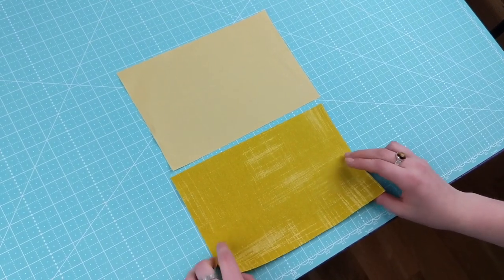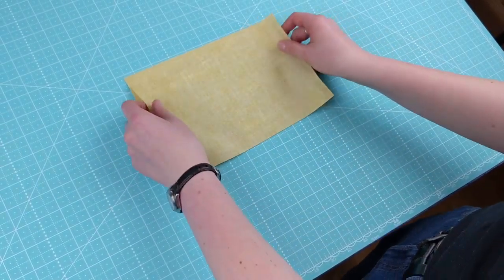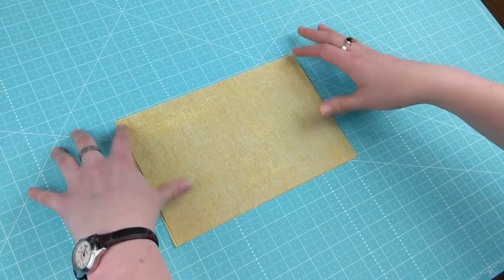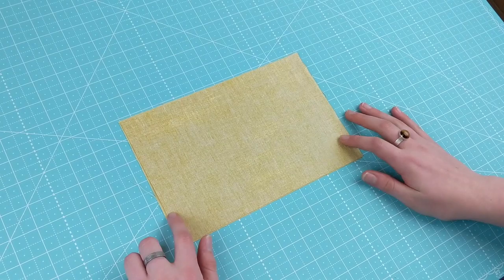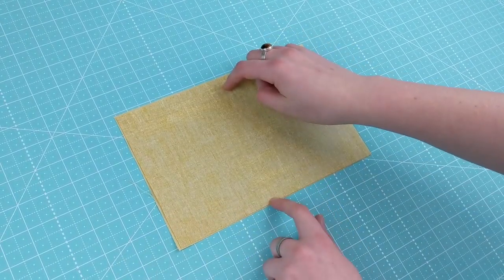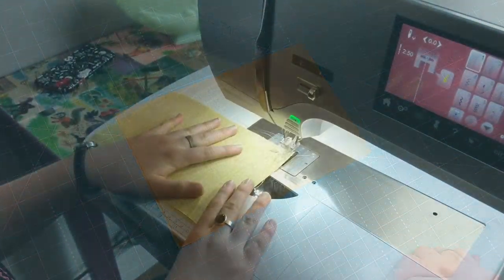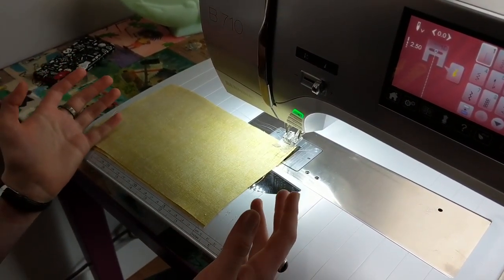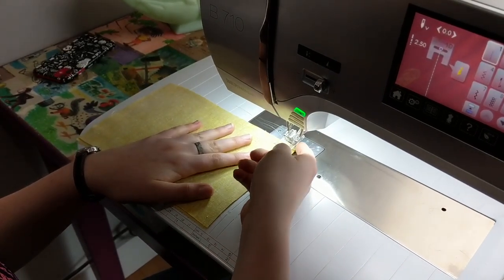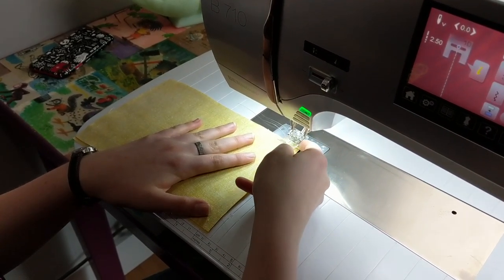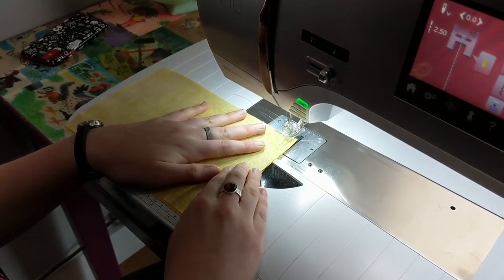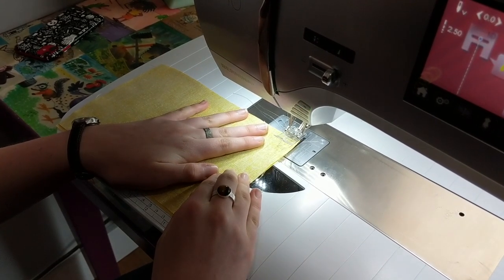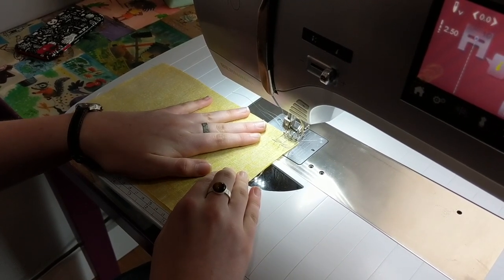Now we're going to take this to the machine and we're going to sew them right sides together. We're just going to sew these short sides at approximately a quarter of an inch seam allowance. Do not sew these sides yet. I'm not going to pin it because there's nothing that's going to be torquing it. For me, a quarter inch is the edge of my presser foot, but you need to know what works for your machine.